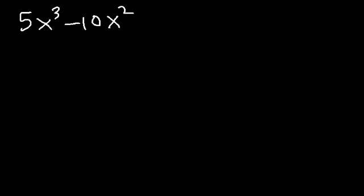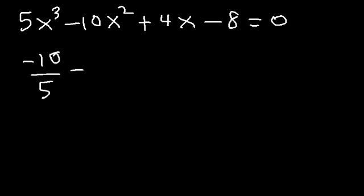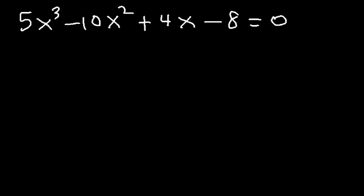Let's try a different example: 5x cubed minus 10x squared plus 4x minus 8. If you have a polynomial with four terms, always check to see if you can factor by grouping. To do so, the first two coefficients must have the same ratio as the last two coefficients. Negative 10 divided by 5 equals negative 2, and negative 8 divided by 4 equals negative 2. Since the ratios match, we can factor by grouping.